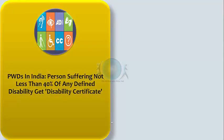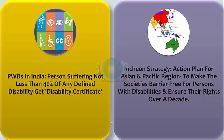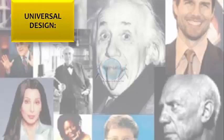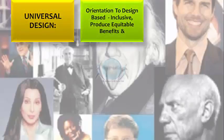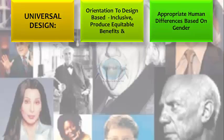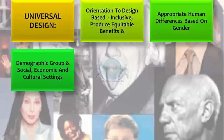Now let us see the status of PWDs in India. A PWD in India is a person suffering from not less than 40% of any defined disability as certified by a medical authority to get a disability certificate. There is the Incheon Strategy, which is an action plan for the Asian and Pacific region to make society barrier-free for persons with disabilities and to ensure their rights over a period of a decade. Universal design is an orientation to design based on the premise that the design process must be inclusive, should produce equitable benefits, and should be appropriate to human difference, covering all gender, demographic, social, economic, and cultural settings.